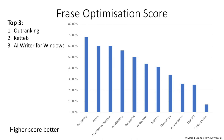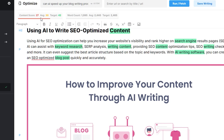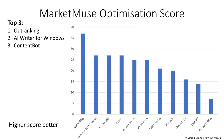Market Muse is a similar tool to Phrase, but in this case it calculates a target score, an average score, and your content score. The closer to the target score the better, and we see a similar pattern again — Outranking does incredibly well, which didn't really come as a surprise as that's what I've been using for some time and it always performs excellently.